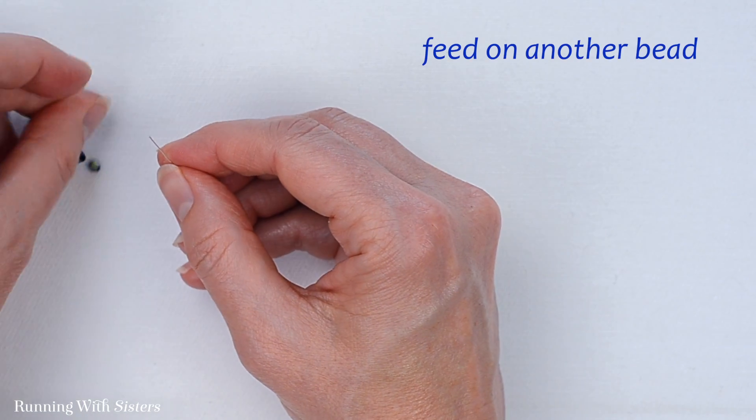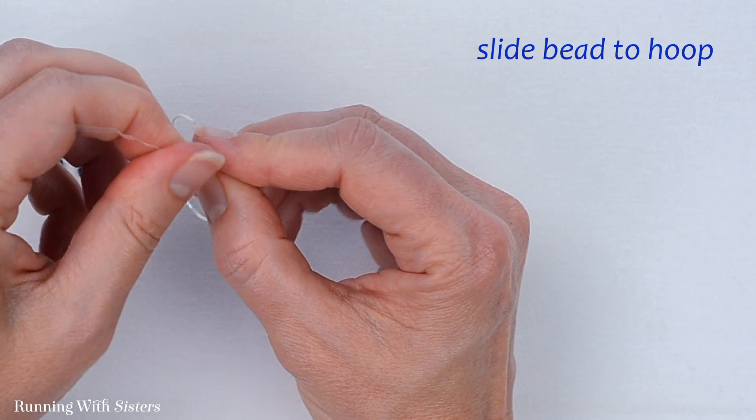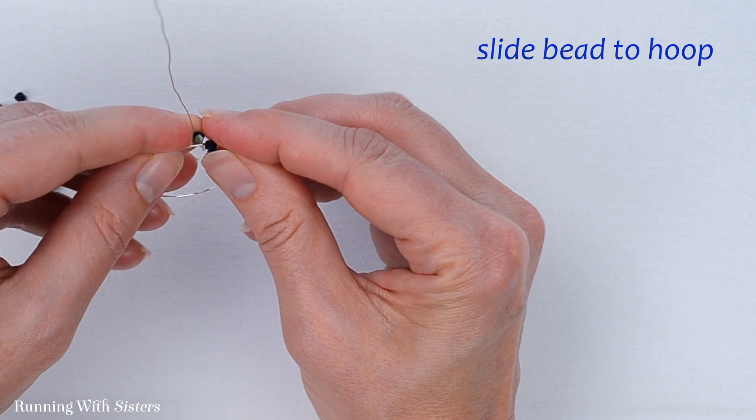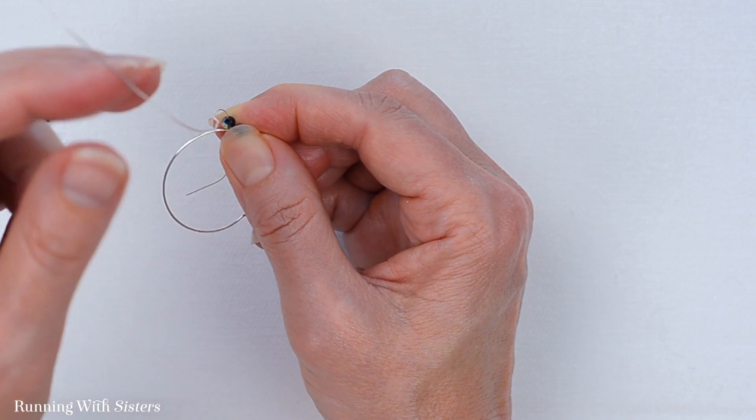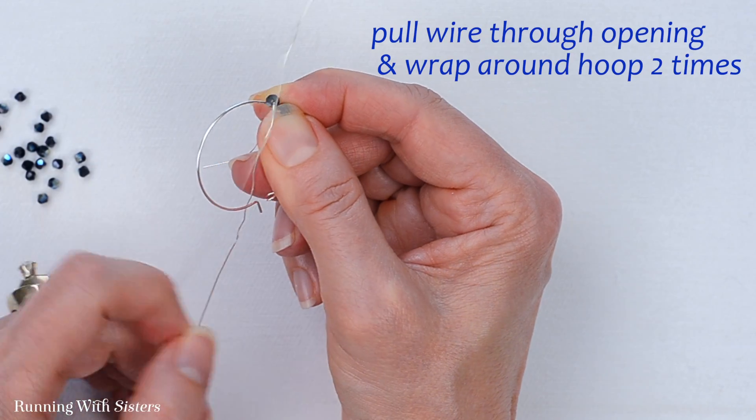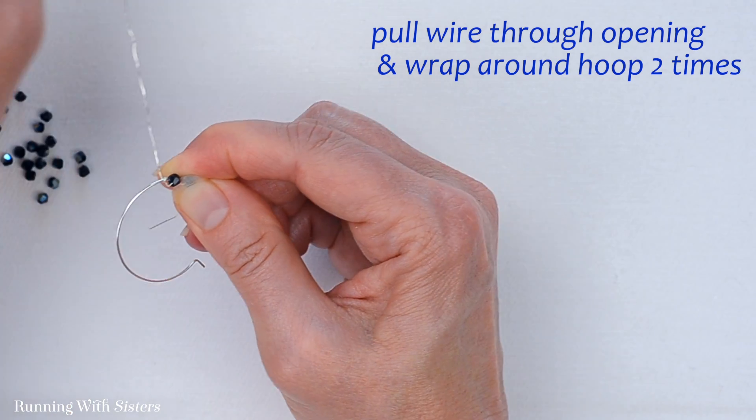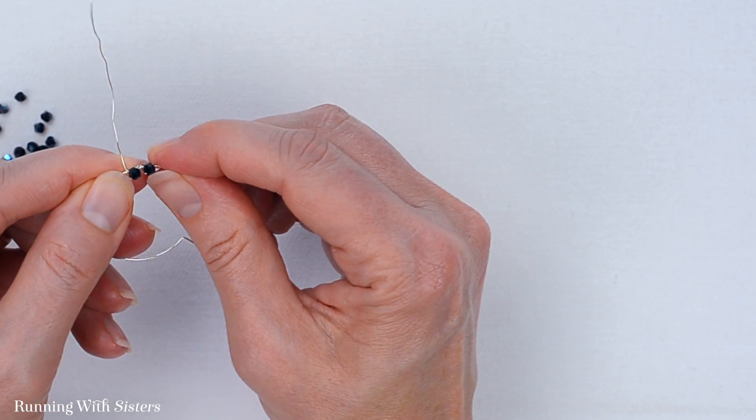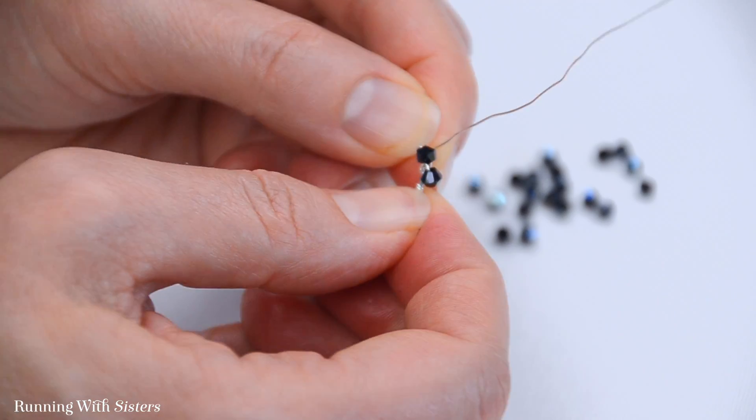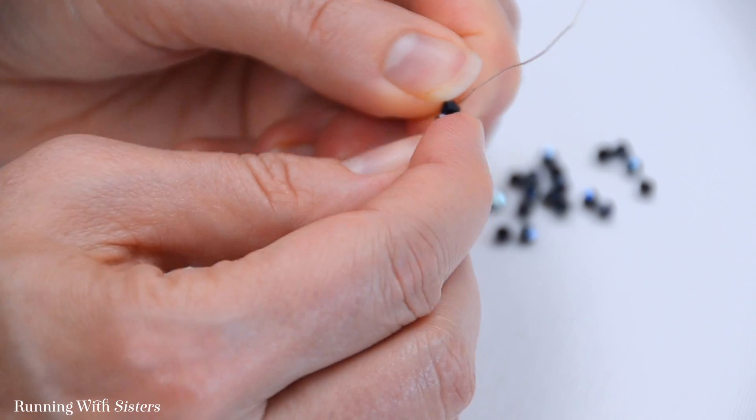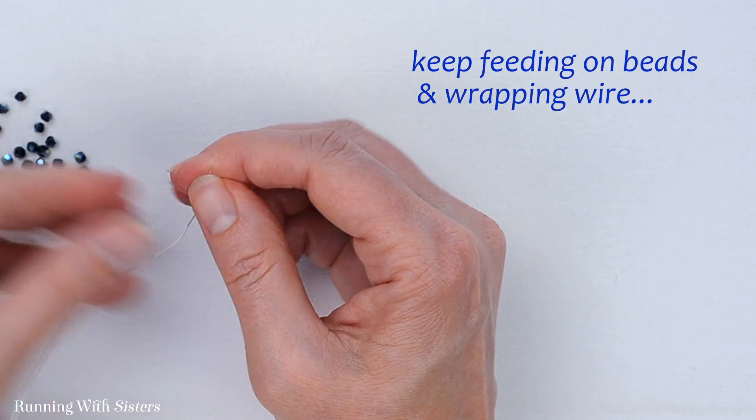I'm going to feed on another bead, just pull that right up to my hoop. I'm going to hold that bead in place with one hand, take this end and pull that wire through that opening of the hoop two times. You'll see that these start to line up as I press them together. See how they're lining up? It's sort of magical that way. I'm going to keep feeding on beads here.